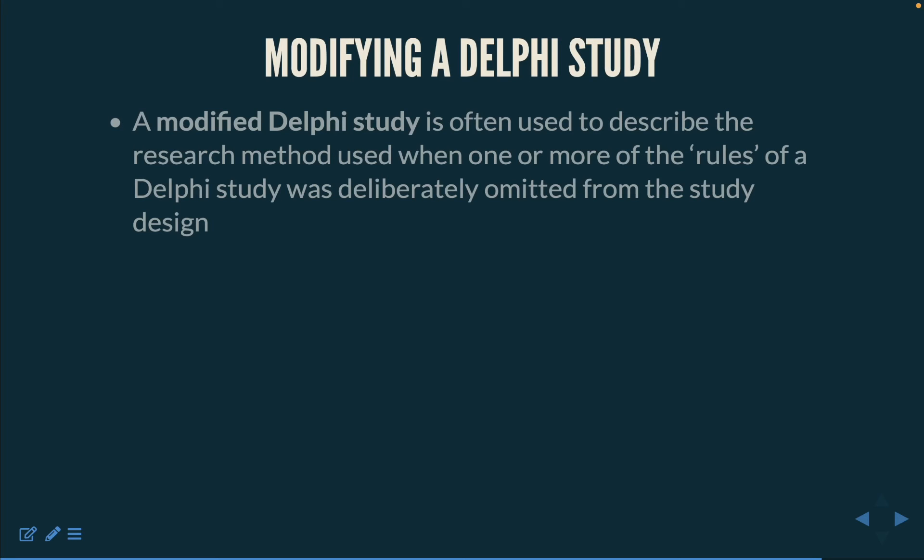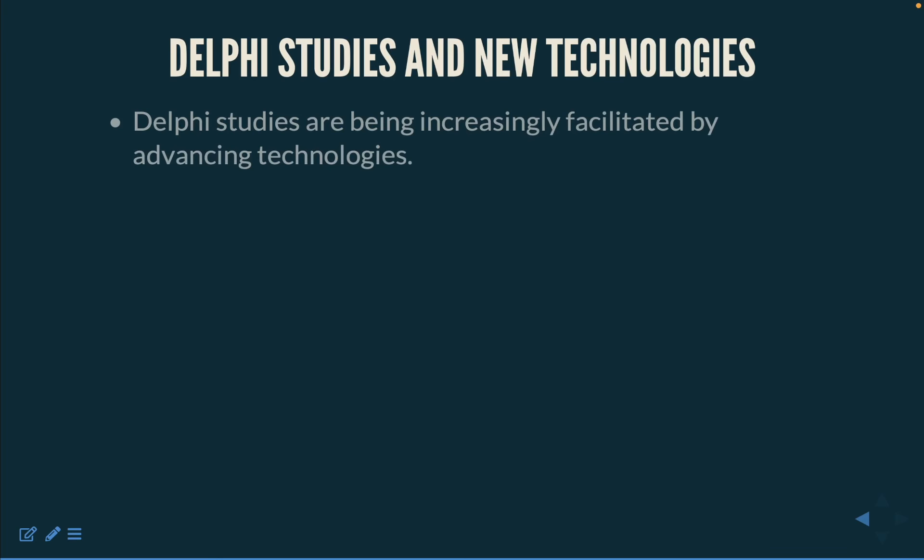A modified Delphi study is often used to describe the research method when one or more of the rules of the Delphi study has been deliberately omitted. Caution must be taken when modifying a Delphi study, as the design was created for a specific purpose and any modification may well disrupt the process. The use of email, digital questionnaires online, virtual feedback spaces, and online discussion forums are encouraging greater use of traditional approaches and increasing opportunities for modified Delphi studies. As with other research methods, the impact of technology can mainly be seen in data collection and analysis — the methods remain constant, and the structure of the Delphi study will not be altered by the mechanisms adopted for data collection, providing the research design remains constant.